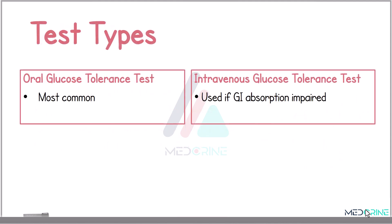There are two types of glucose tolerance testing: an oral glucose tolerance test and an intravenous glucose tolerance test. The oral glucose tolerance test is the most common type, while the intravenous glucose tolerance test is used if gastrointestinal absorption of glucose is impaired.